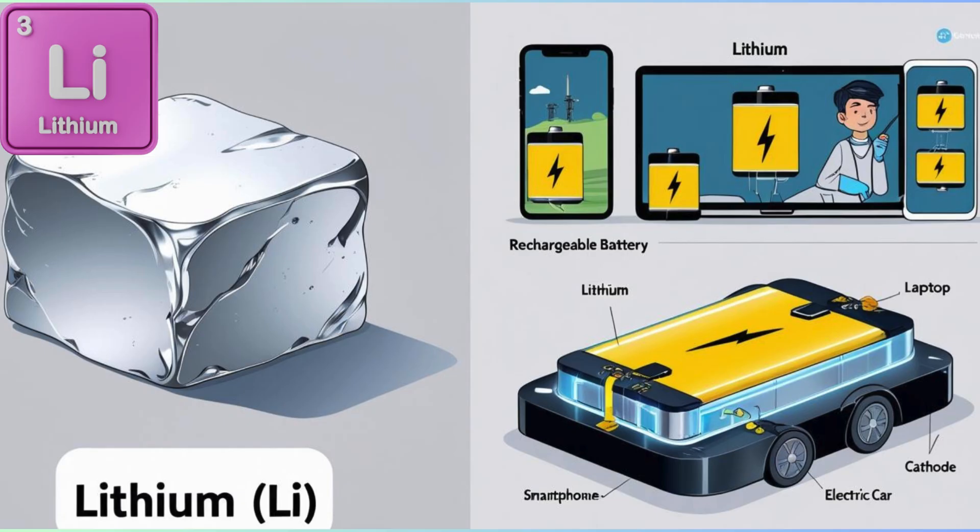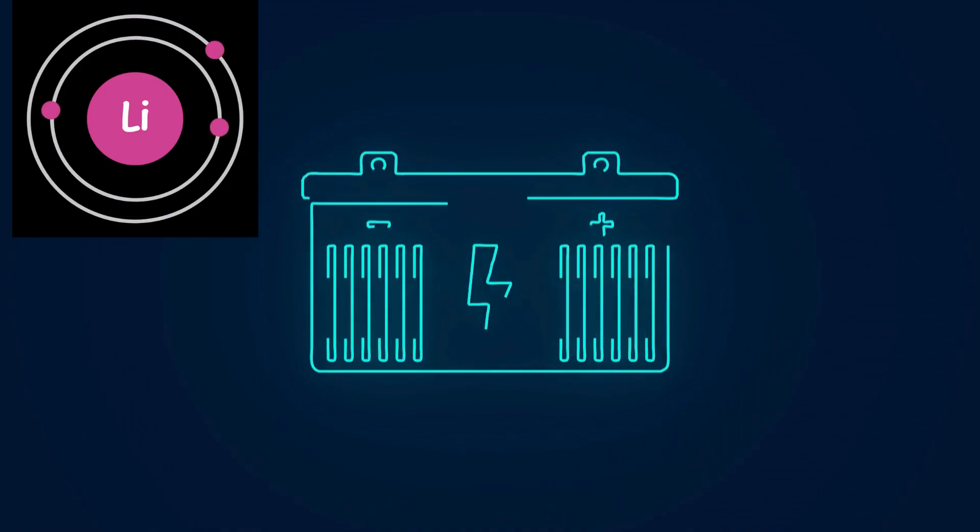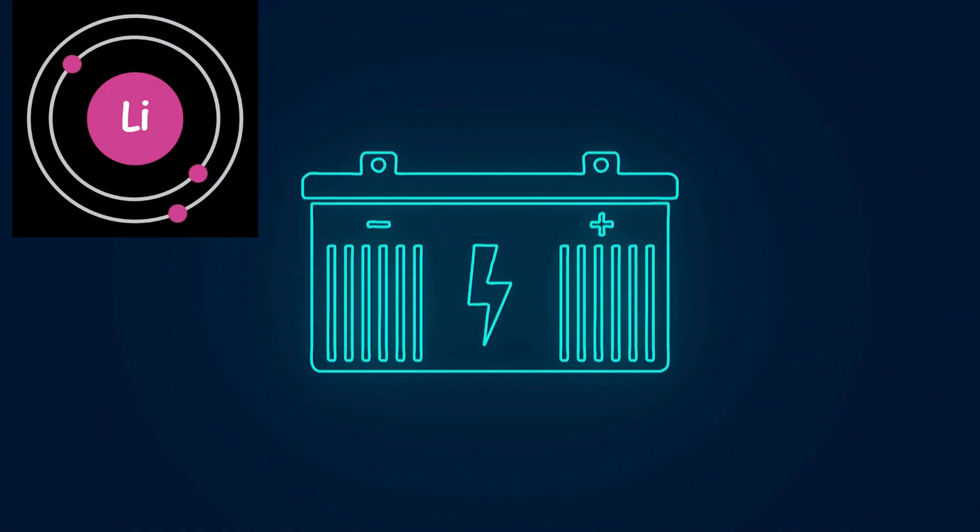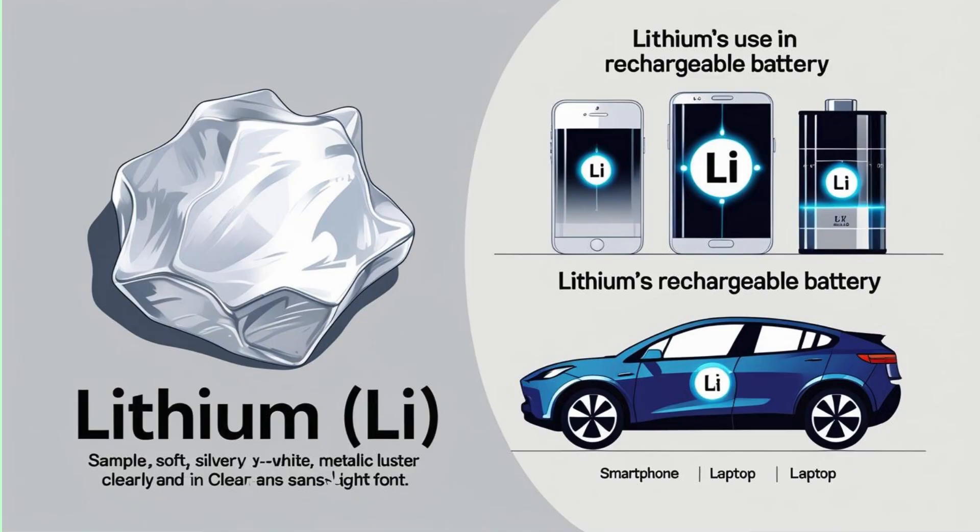Three. Lithium. Lithium is a soft, silvery metal. We don't see it every day, but you probably use it without even knowing. It's found inside rechargeable batteries, like the ones in phones, laptops, and electric cars.